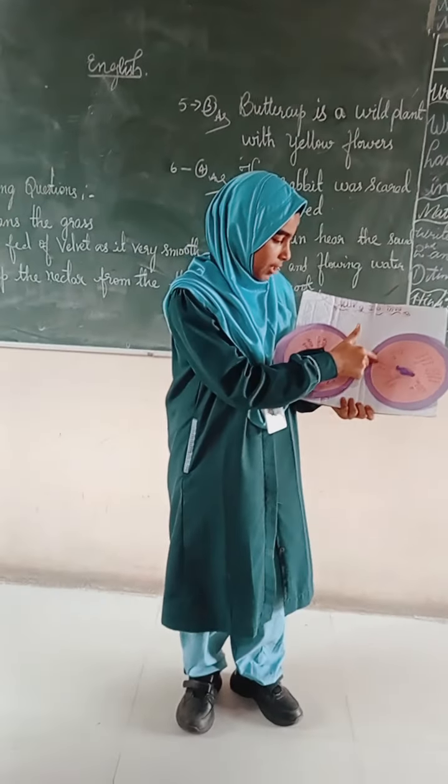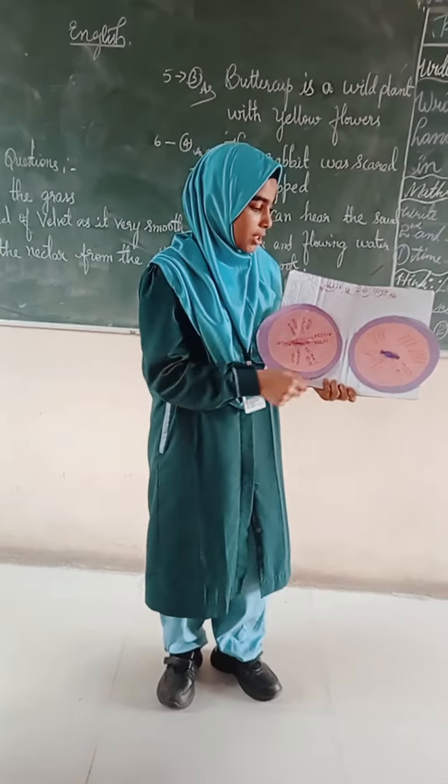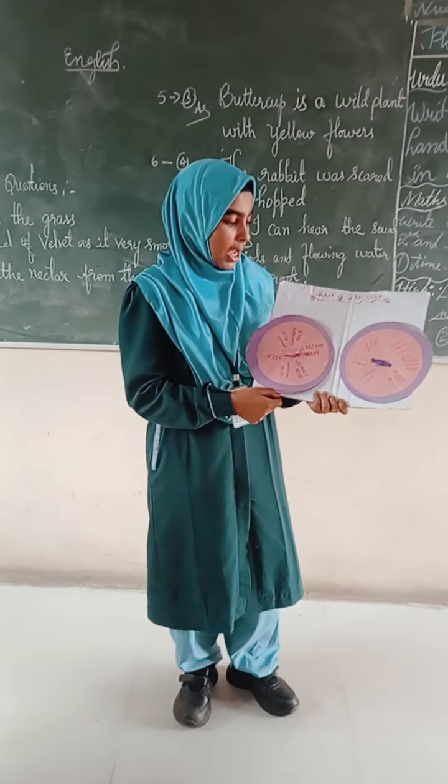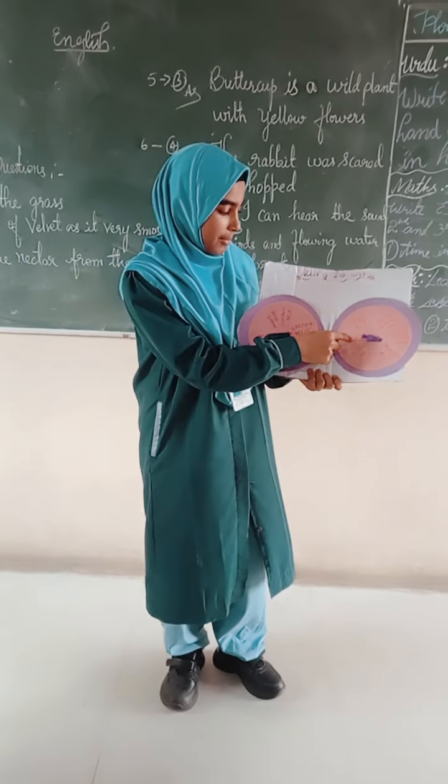What is meant by collective noun? Collective noun is a group of people and animals. Example: family, sport.